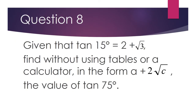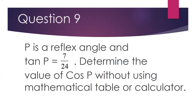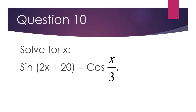Question 8: Given that tan 15 degrees is 2 plus root 3, find without using tables or a calculator, in the form a plus 2 root 3, the value of tan 75. Question 9: P is a reflex angle and tan P is 7 over 24; determine the value of cos P without using mathematical tables or a calculator. Question 10: Solve for x if sin(2x + 20) is cos(x over 3).